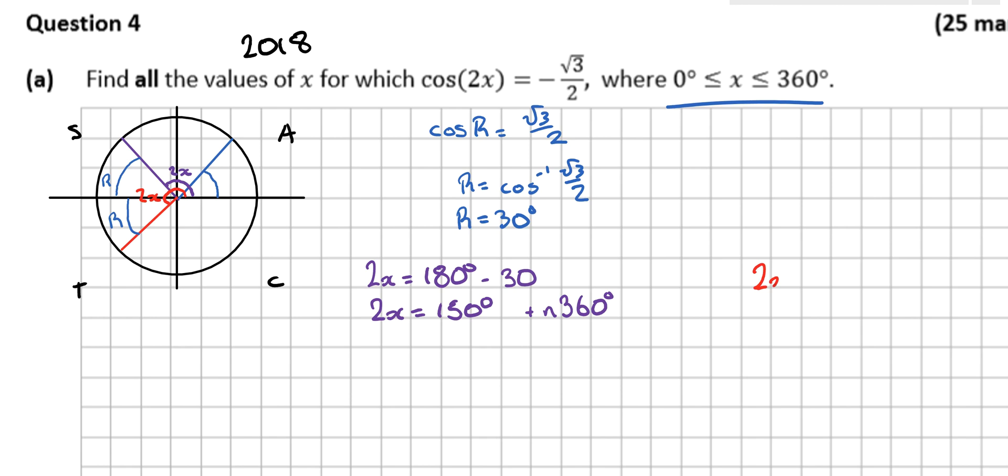Similarly for the red one then. It's bigger than 180 degrees. So it's 180 degrees plus the reference angle which was 30. So 2x is equal to 210. And similarly again I would add on 2nπ if I was working in radians, but I'm working in degrees. So I add on n360.